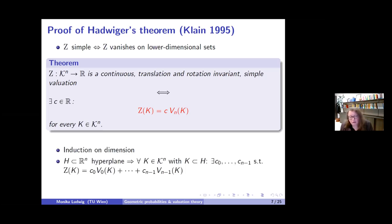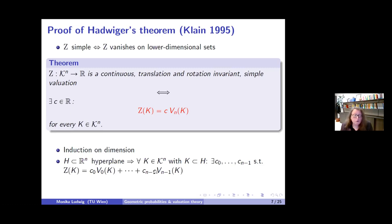If you have this, you can use induction on the dimension. You choose a hyperplane in R^n and look at convex bodies K contained in this hyperplane, apply the induction assumption, and know there are constants such that you can write the function as a linear combination of intrinsic volumes. Since everything is rotation invariant, these constants don't depend on the hyperplane. Then Z minus this linear combination is a simple valuation, and since you know what simple valuations are, you're done.